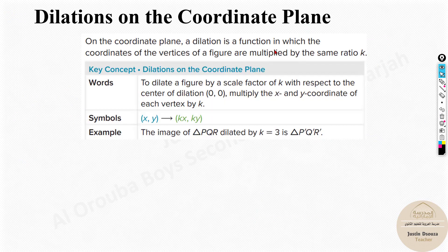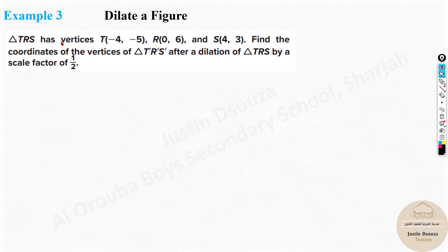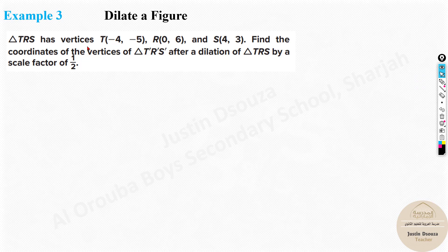Now, what about coordinate plane problems? If they give you a coordinate system, you just know the x and y values and multiply by the scale factor to get the dilated image. For example: triangle TRS has vertices T(−4, −5), R(0, 6), and S(4, 3). Find the coordinates of the vertices of triangle T'R'S' after dilation by scale factor 1/2. You simply multiply each coordinate by 1/2.